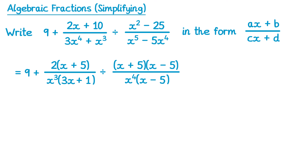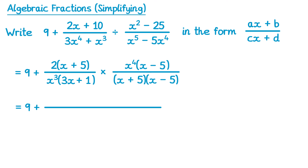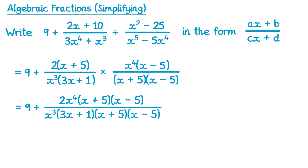Now in this question there's an addition and also a division. The order of operations says we should divide before we add. So we're going to leave that plus alone and work on dividing these fractions. To divide fractions we turn that divide into a multiply, but take the reciprocal of the second fraction — so we need to flip that fraction upside down. Now we can go ahead and multiply. So if we multiply the numerators we have a 2, then an x to the power 4, and then two brackets: x plus 5 and x minus 5. On the bottom we've got x to the power 3, and then three brackets: 3x plus 1, x plus 5, and x minus 5. We can see common factors, so we can cancel the x plus 5s and the x minus 5s. We can also cancel the x's — we've got x to the power 4 on the top and x to the power 3 on the bottom, so we're just left with 1x on the top.